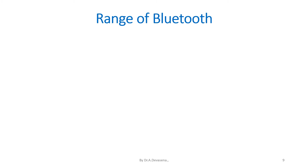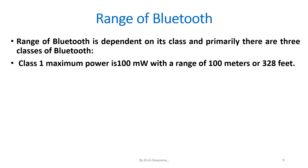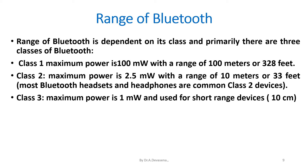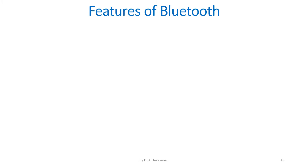The range of Bluetooth is dependent on its class, and primarily there are three classes. Class 1: maximum power is 100 mW with a range of 100 m or 328 ft. Class 2: maximum power is 2.5 mW with a range of 10 m or 33 ft — most Bluetooth headsets are Class 2 devices. Class 3: maximum power is 1 mW, used for short-range devices of about 10 cm. The more objects between devices, the less overall range.